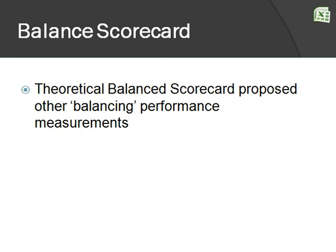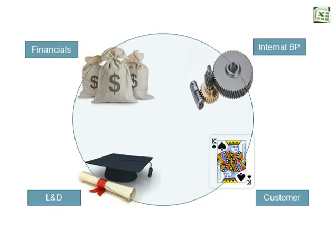So recently, a theoretical balance scorecard was proposed, which balances other performance management. I think that was somewhere around the 1990s — it was proposed by Kaplan and Norton. The other performance management dimensions were learning and development, customer satisfaction, and internal business process.